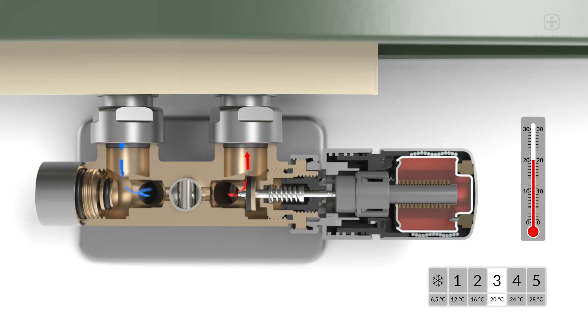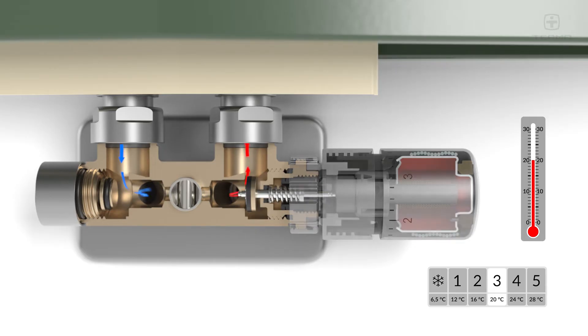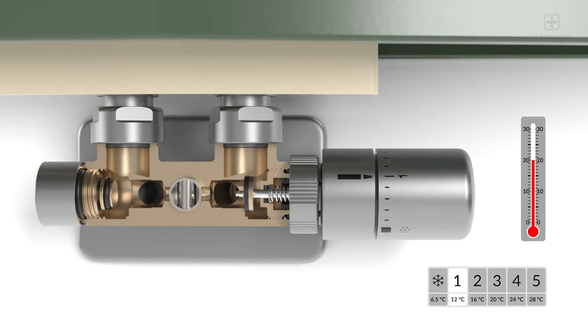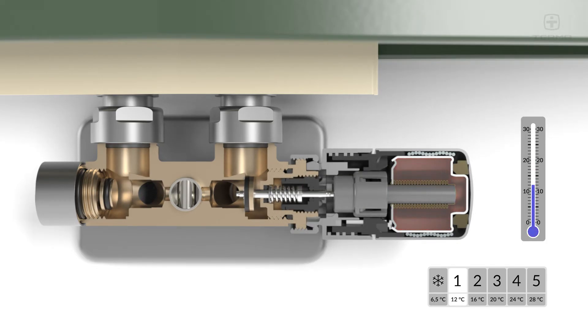At 20 degrees Celsius in the room. When we reduce the setting from 3 to 1, the valve closes completely until the room temperature drops to the set level. At this point the valve gently opens again.